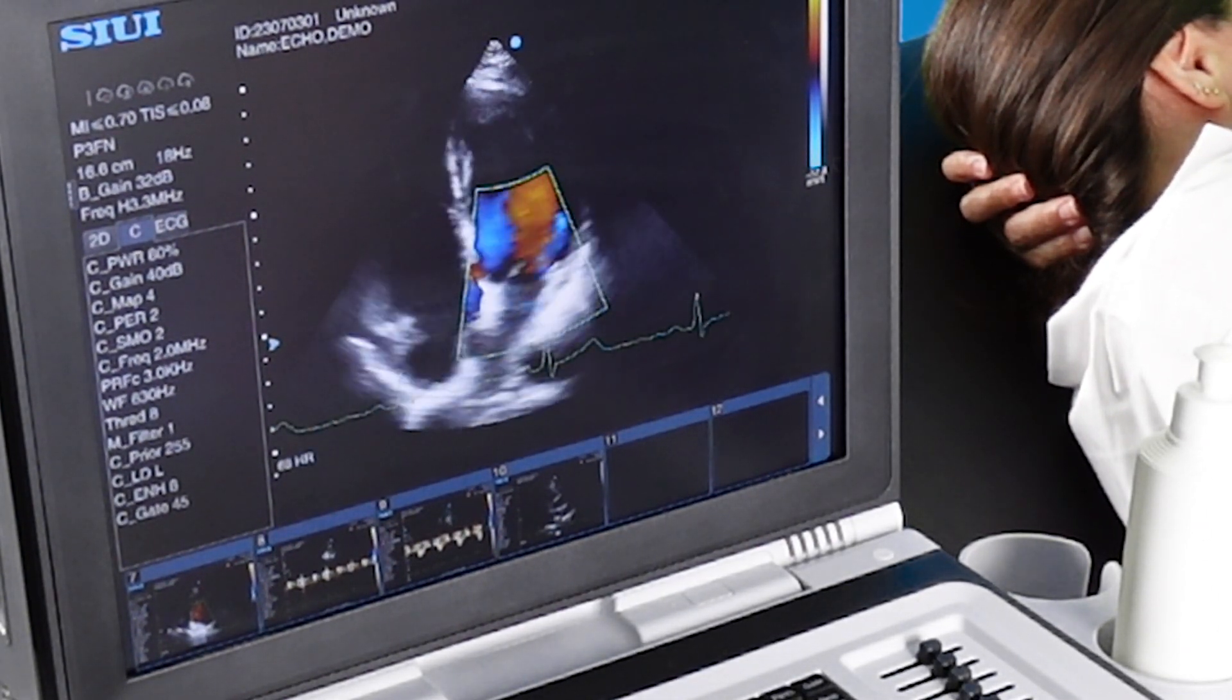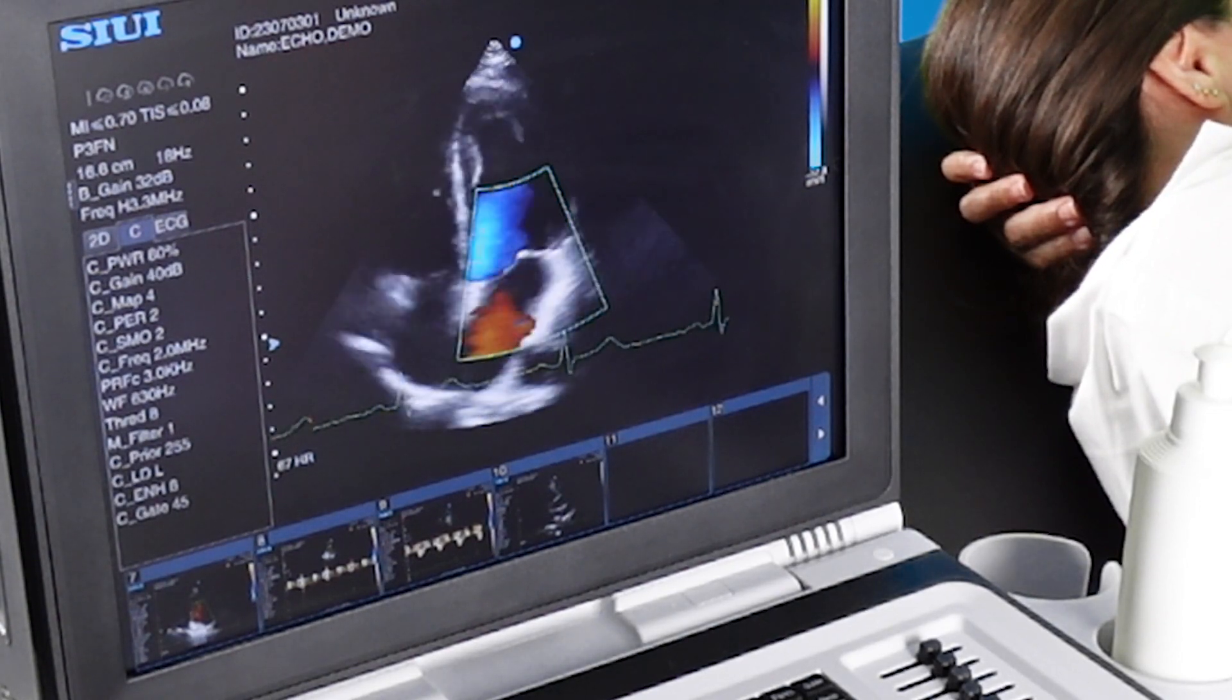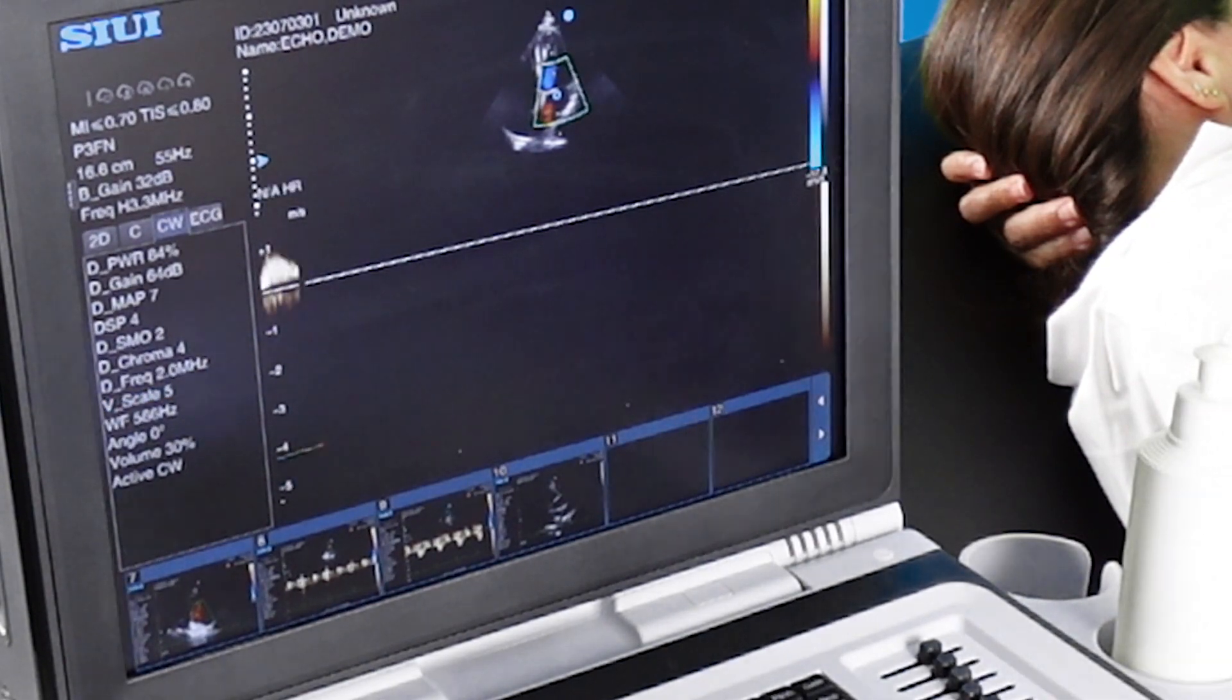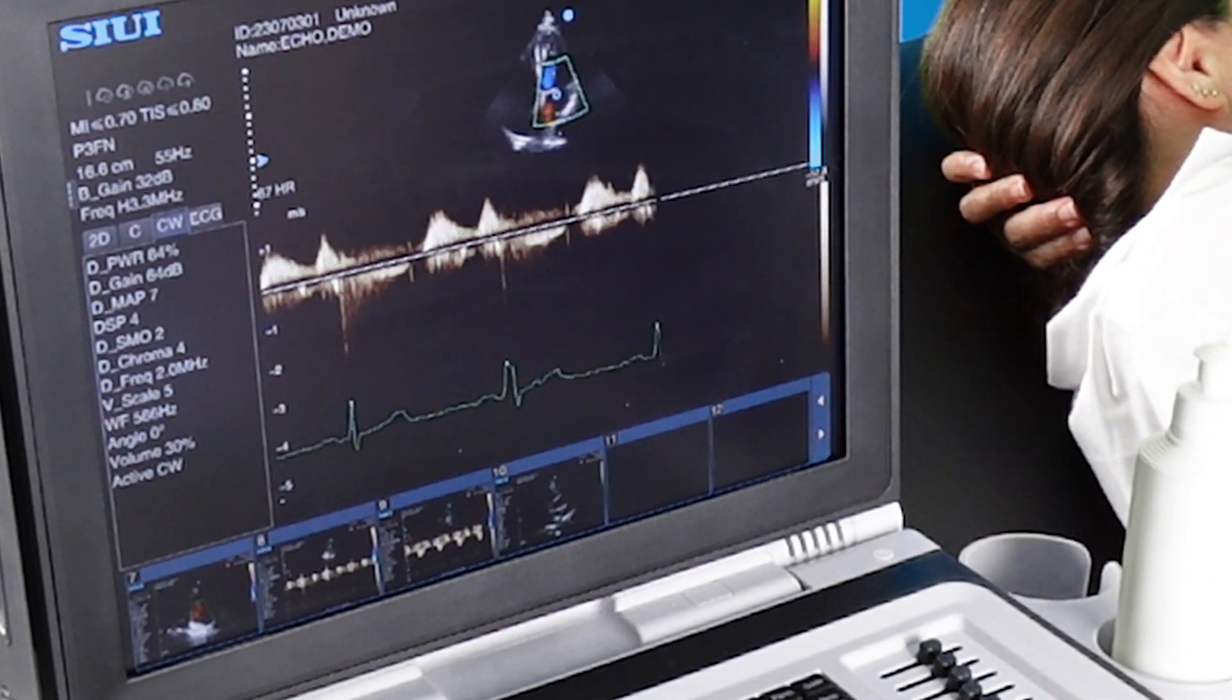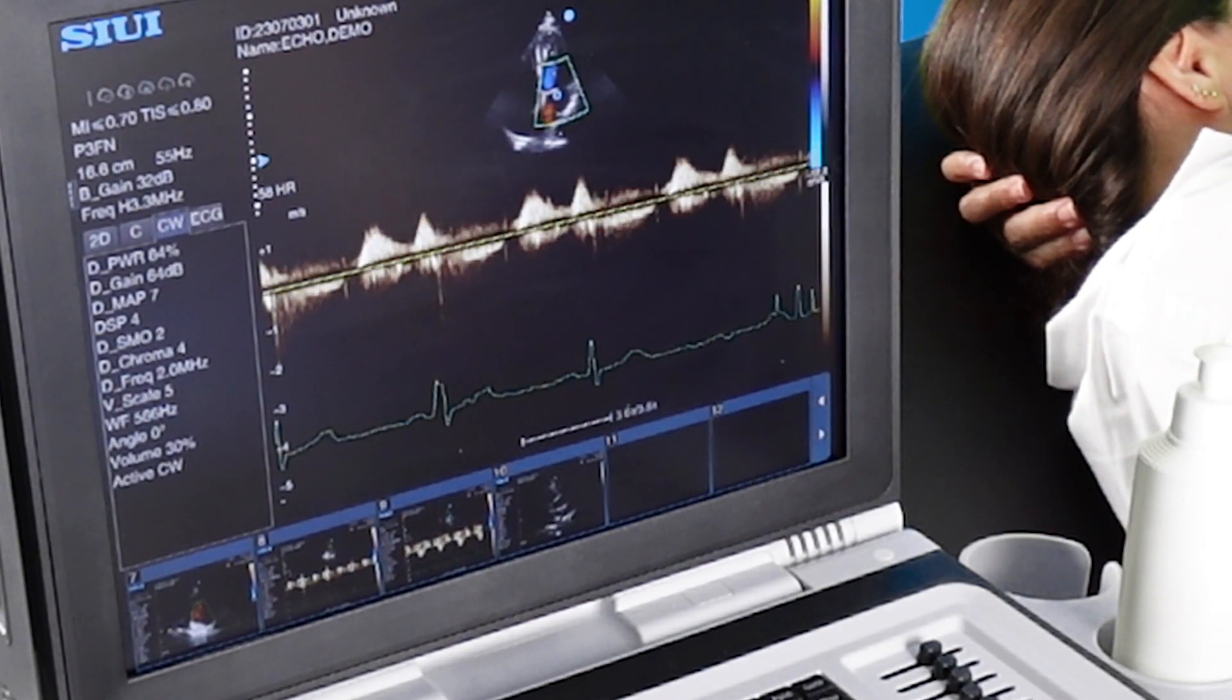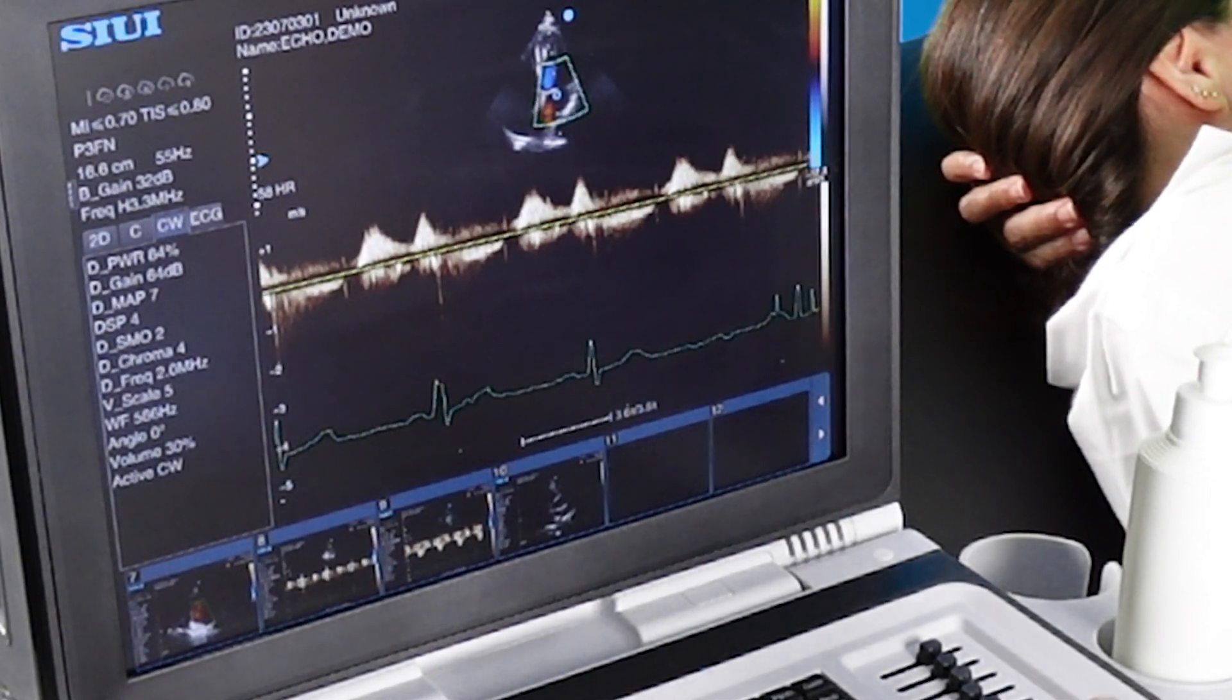Putting color Doppler over the mitral valve, we can check for regurgitation. Continuous wave Doppler allows us to get a trace of any regurgitation that there is.